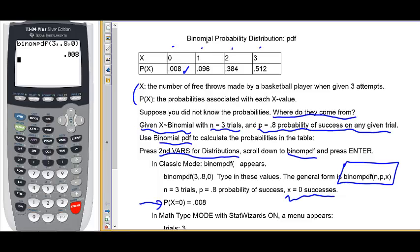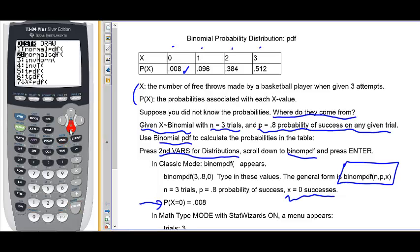Let's do one more. Let's do second, distributions. Go down to binomial pdf again. There it is. And we press three, comma, point eight, comma. And I'll go for the probability that x equals two this time, just to do a different one. Press enter. And there it is.